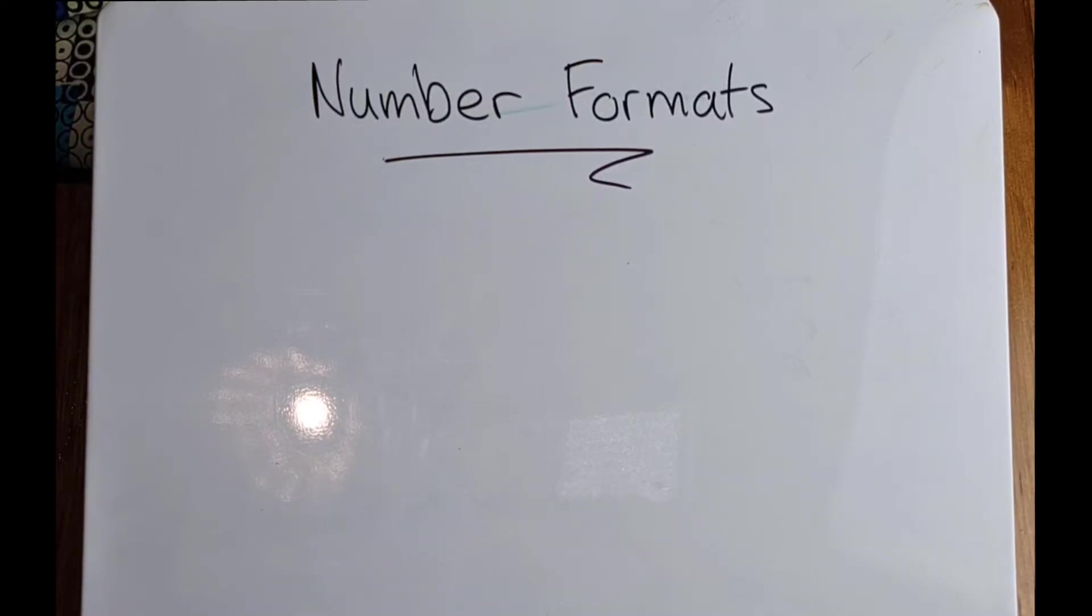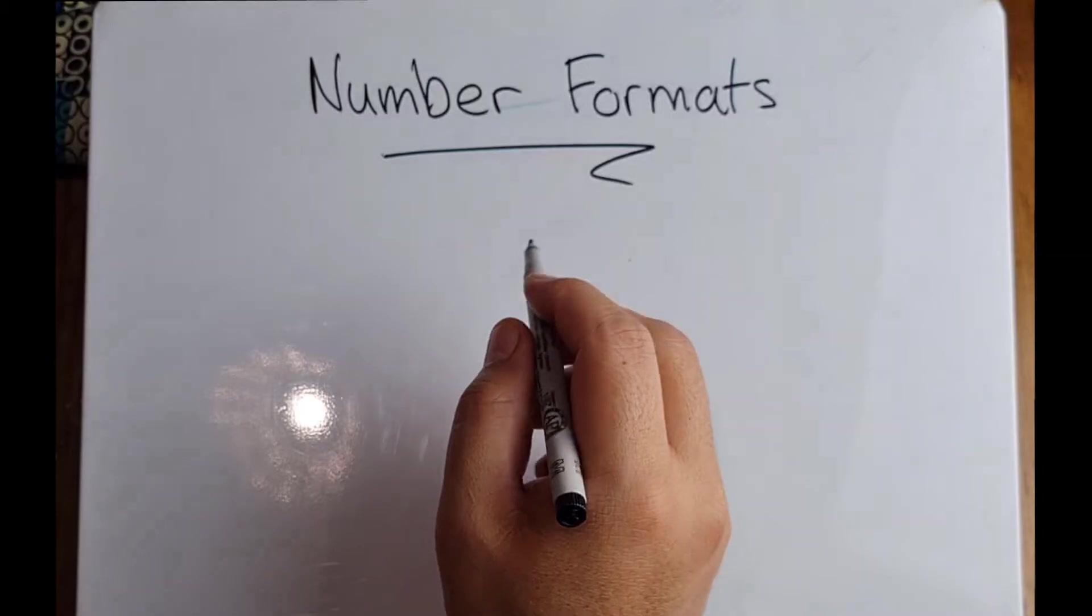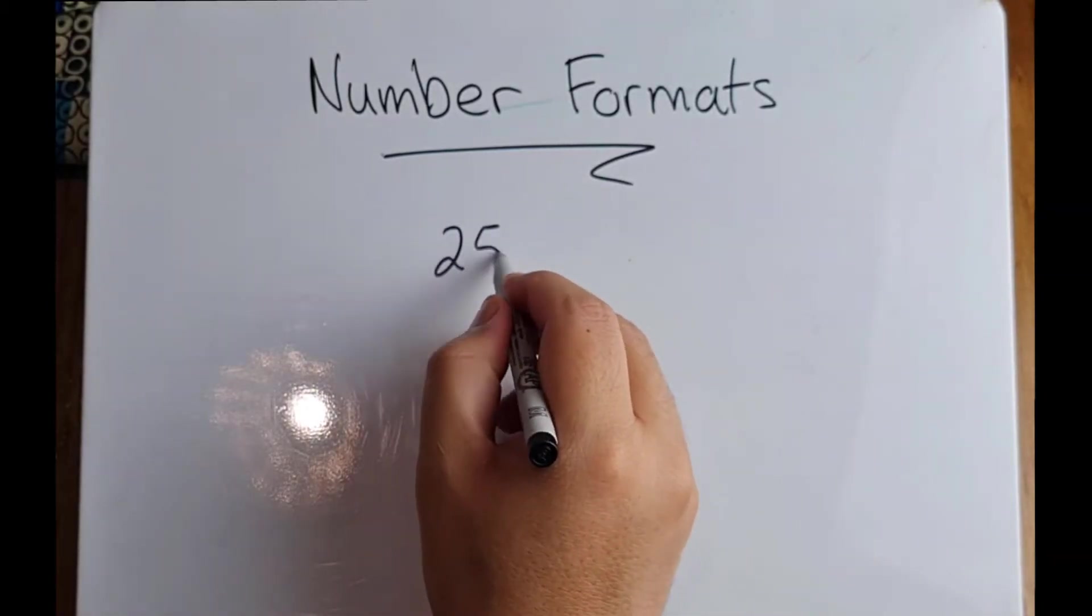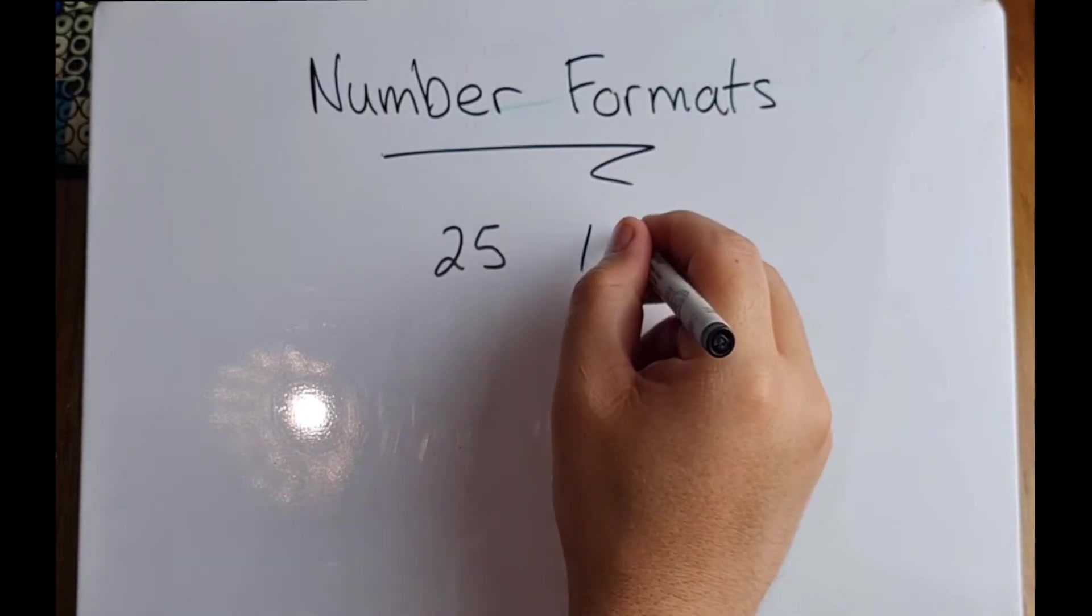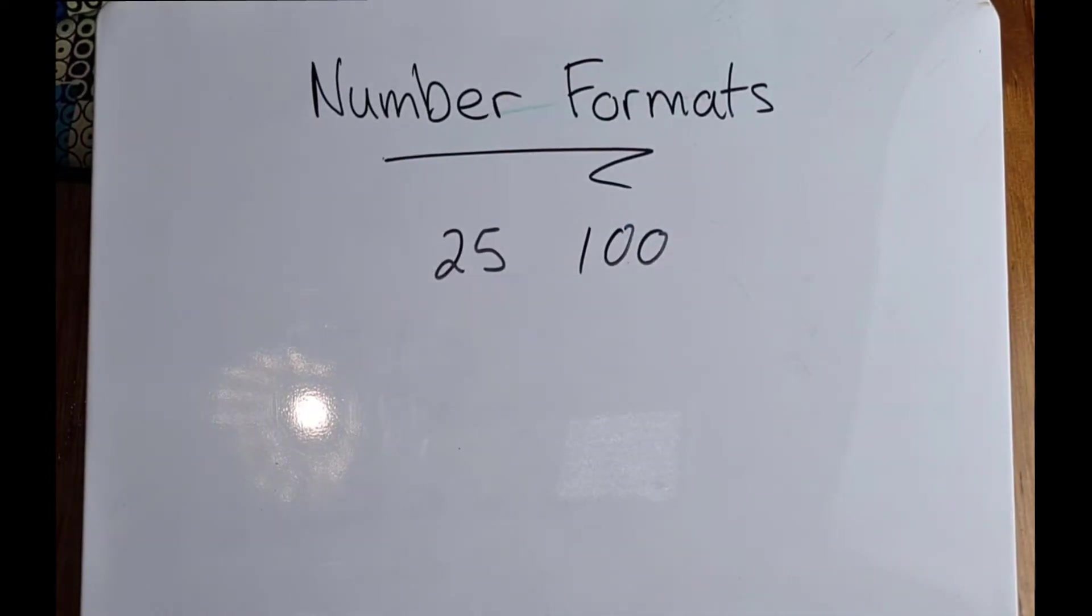For example, some calculators insert what looks like commas after every three digits. When I write down the number 25, it doesn't do anything. When I write down the number 100, it doesn't do anything either.